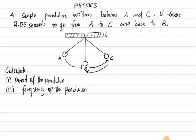Okay viewers, this is Previous the Tutor, welcome to this video. So we have a question here in physics which says a simple pendulum oscillates between A and C. It takes 2.05 seconds to go from A to C and back to B.